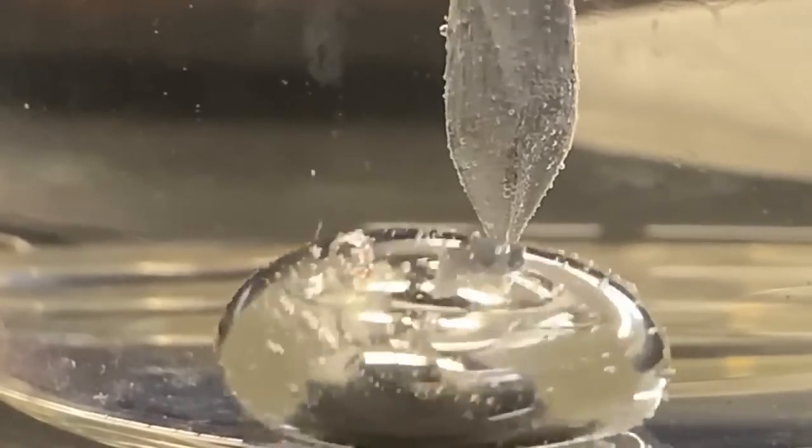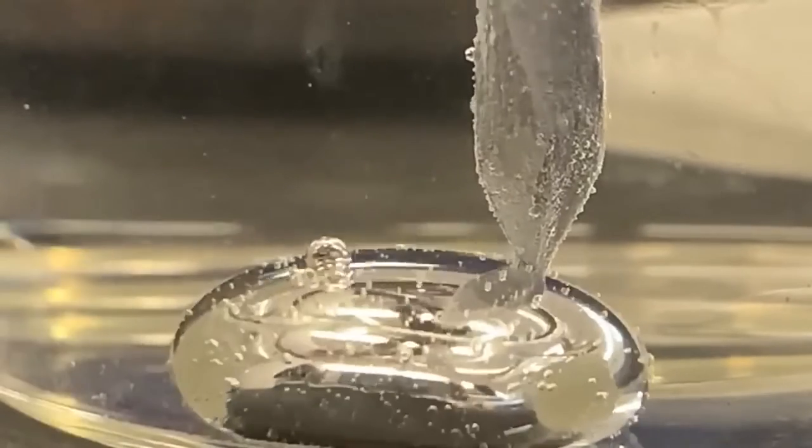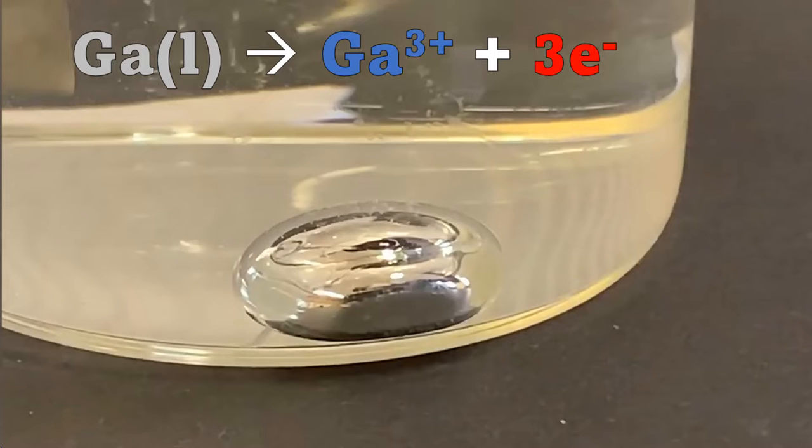What causes the gallinstan blob to throb? Well, when a drop of gallinstan is immersed in acid, a chemical reaction happens on the surface of the droplet. Surface layer gallium atoms are oxidized as shown by the chemical equation here.